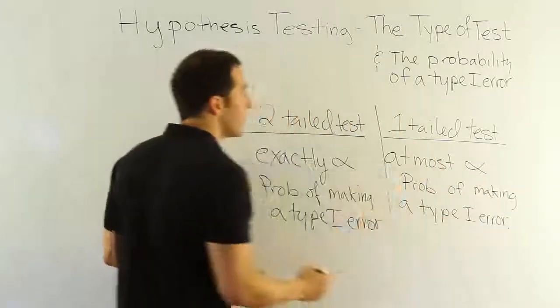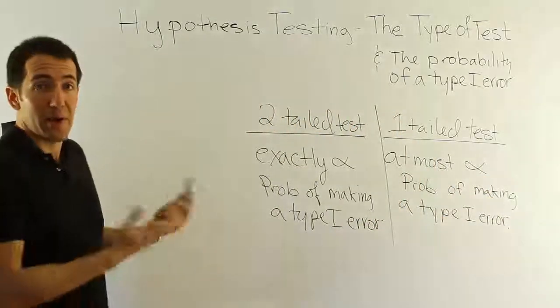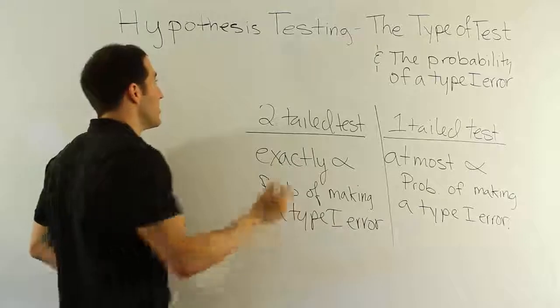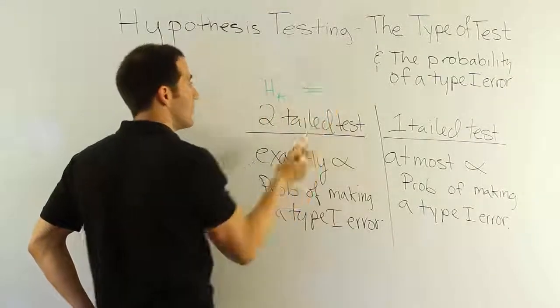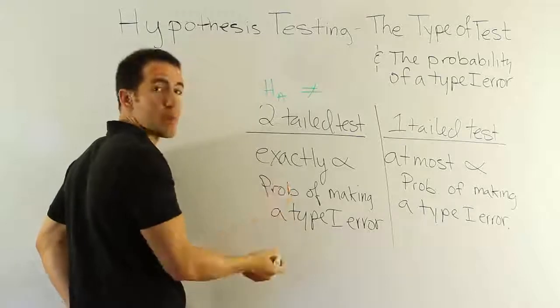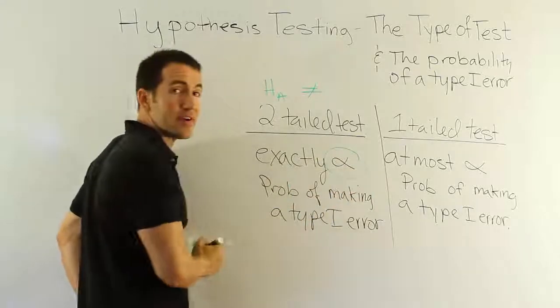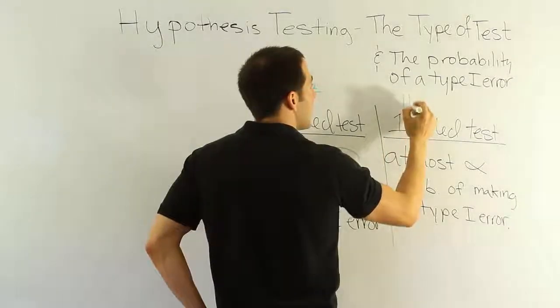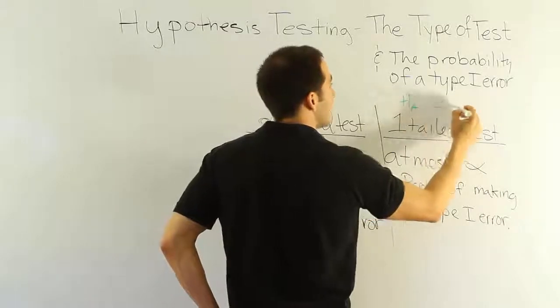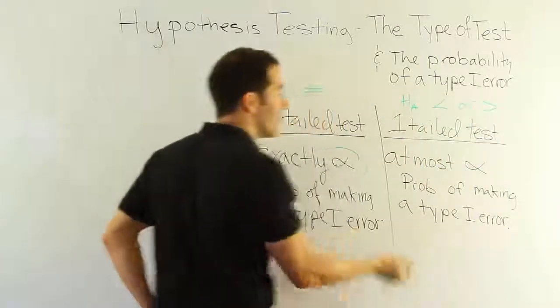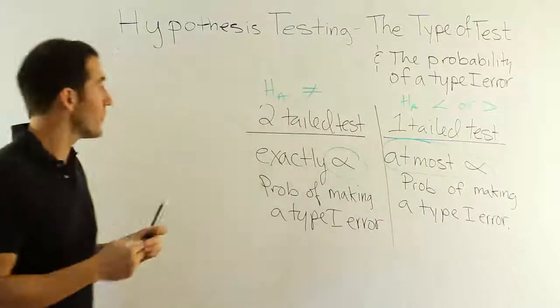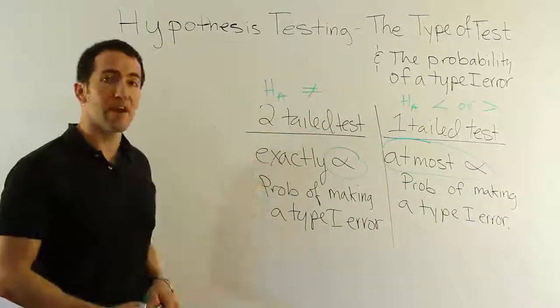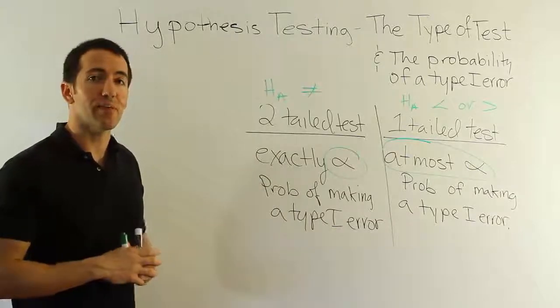It's that simple. So it's just a simple rule to remember. And you could actually pair this up with your symbols in HA. If HA has not equal to, we have this probability of committing a Type 1 error, exactly alpha. If HA is less than or greater than, then we have this scenario: at most alpha. And that's it. That's your rule. That's how you know the probability of committing a Type 1 error for any hypothesis test you come across.